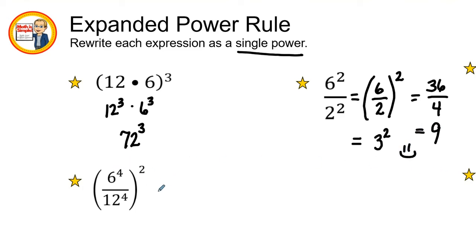Our final example is six to the fourth power over 12 to the fourth power, all over or all raised to two, the second power. So can I simplify my fraction just like I simplified my fraction here? Absolutely.